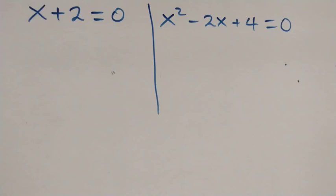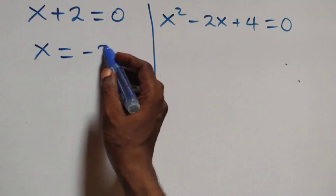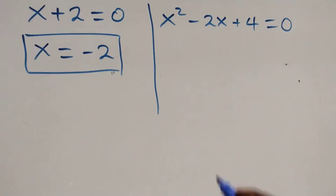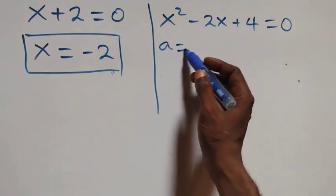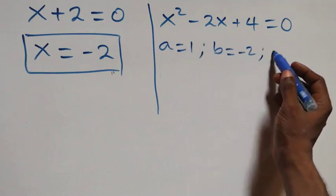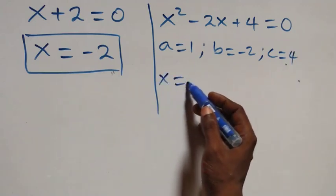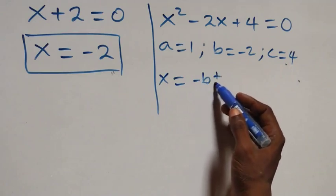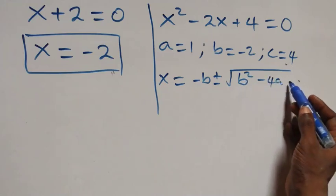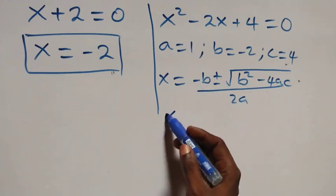From x + 2 = 0, we get x equals minus 2, which is a real solution. On the other side, we have a quadratic equation where a equals 1, b equals minus 2, and c equals 4. We apply the quadratic formula: x equals minus b plus or minus square root of b² minus 4ac, over 2a.